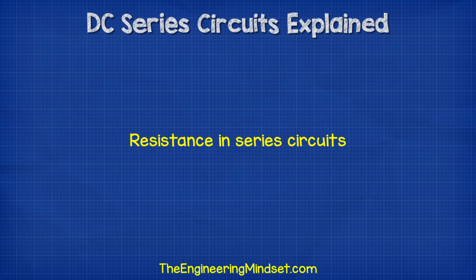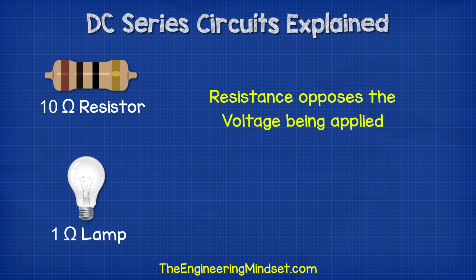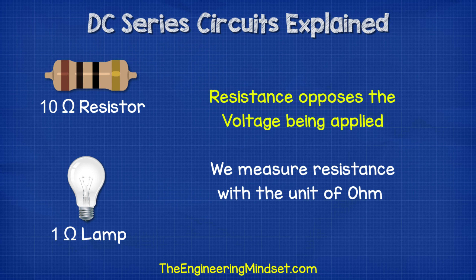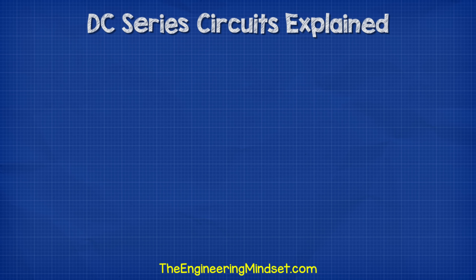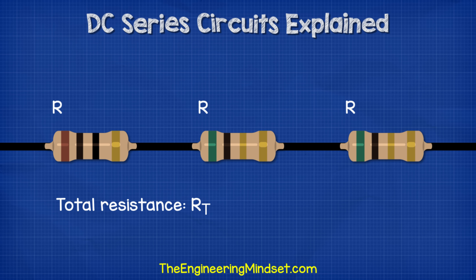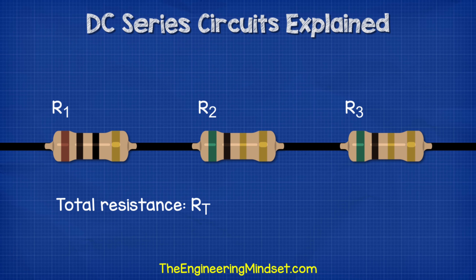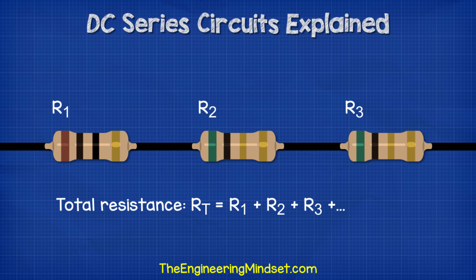Resistance in series circuits. Each component will have a certain resistance. The resistance opposes the voltage being applied. We measure resistance in a unit of ohms. In series circuits, we find the total resistance for the circuit by simply adding together all the resistances. We label each resistor with a capital R and number them R1, R2, R3, etc. The total resistance is shown with a capital R and a subscript T, representing the total resistance. To calculate the total resistance of a series circuit, we simply add together the resistance value of each resistor.